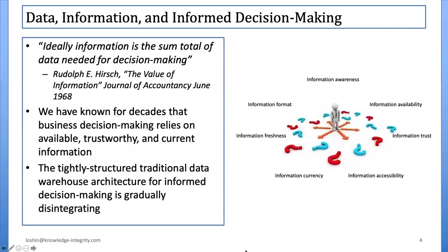To start off, I think it's actually really good to begin a talk about business intelligence responsiveness by reflecting on a historical perspective about the use of information for decision making. Recently I've been doing a lot of reading about information value and decision making, going back over decades of articles and research papers. Many of them reflect this quote from a 1968 article called 'The Value of Information,' which says: ideally, information is the sum total of the data needed for decision making.